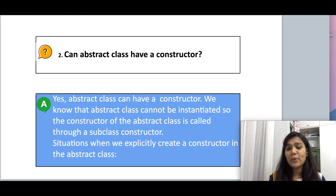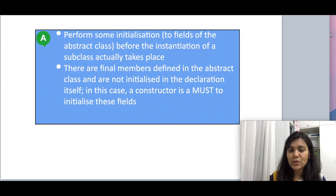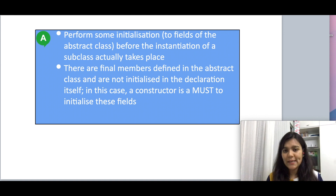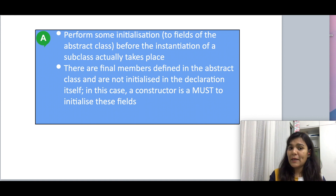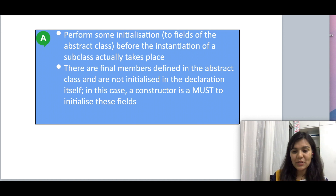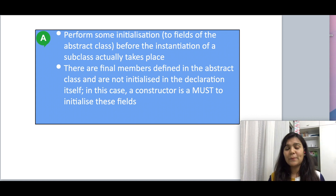Now let's see situations where we can explicitly create a constructor in the abstract class. The first case is where we want to perform some initialization to the fields of the abstract class before the instantiation of the subclass takes place — we assign values to the variables of the abstract class before the subclass members get assigned. The second is where we have final members to which we have not assigned values during declaration. The only way to assign values to final members is in the constructor, so we create a constructor in the abstract class.